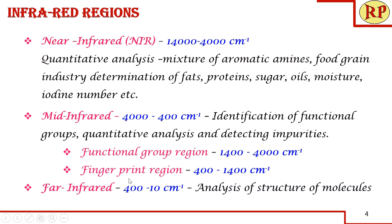The next region is called the fingerprint region, that is 400 to 1,400 cm⁻¹. Here we will have a lot of peaks — it will be very complex and will even overlap. We cannot assign each and every absorption band to a particular stretching or bending vibration, but the pattern of the peaks will correspond to a particular compound. Looking at that pattern, we can compare with known compounds' IR spectra and confirm the unknown compound. That is where the fingerprint region is useful.